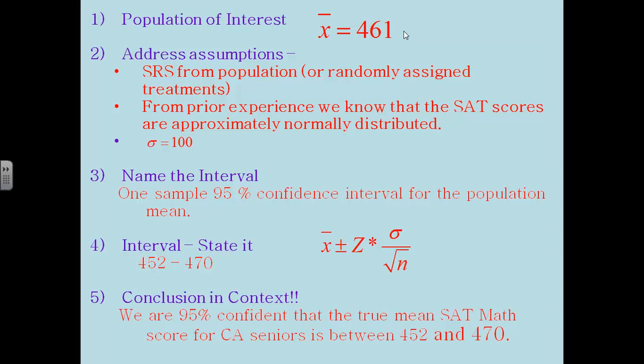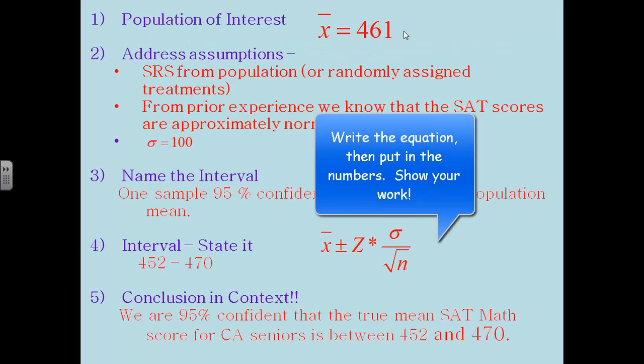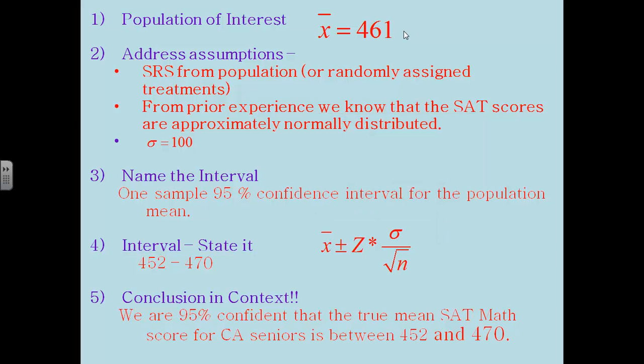Name the interval. It's very important to name it. This is a one sample 95 percent confidence interval for the population mean. We're going to use the formula that's given to you there. And then we're going to use that formula to calculate our interval, which winds up being between 452 and 470. Then our conclusion is we are 95 percent confident that the true mean SAT math score for California seniors would be between 452 and 470.